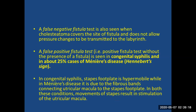A false negative fistula test occurs when a cholesteatoma covers the site of the fistula, preventing pressure changes from being transmitted to the labyrinth. A false positive fistula test — a positive test without an actual fistula — is seen in congenital syphilis and in about 25% of Meniere's disease cases, known as the Hennebert sign. In congenital syphilis the stapes footplate is hypermobile, while in Meniere's disease it is due to a fibrotic band connecting the utricular macula to the stapes footplate, causing stimulation of the utricular macula.